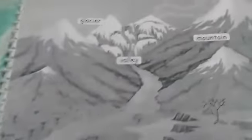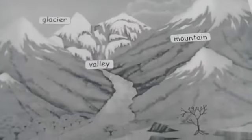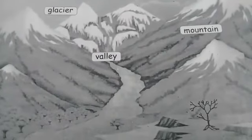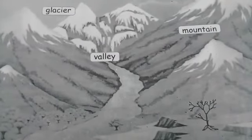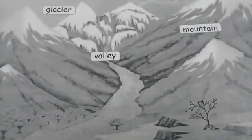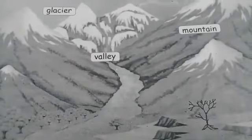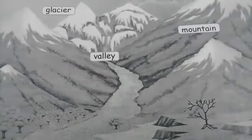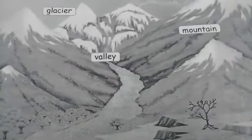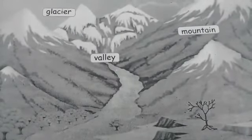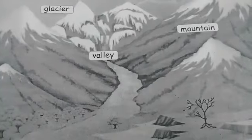Then next one is valley. Valley means palla thakku. The valley is the low land between two mountain ridges which often has a river flowing through it.